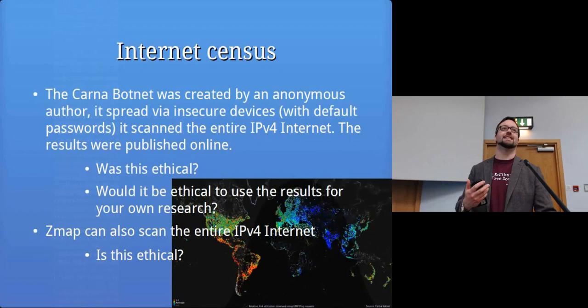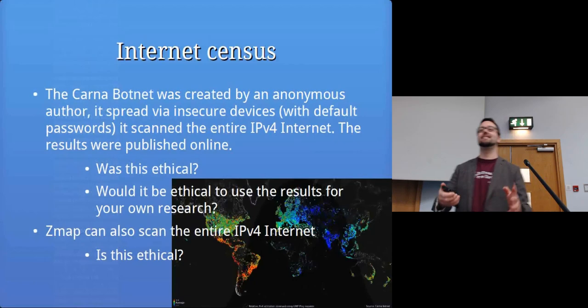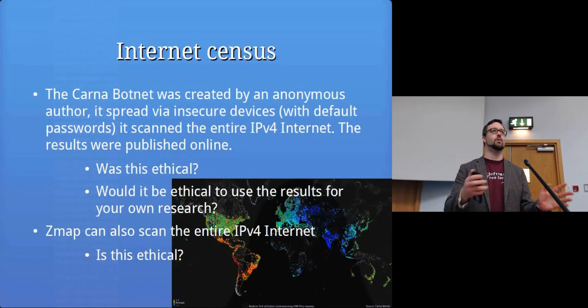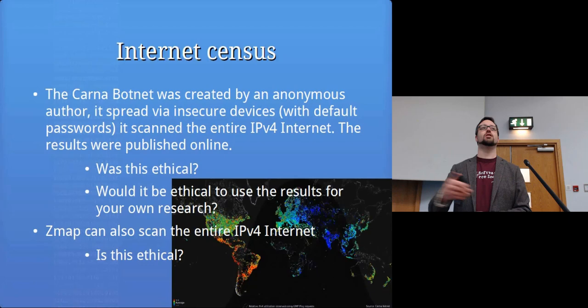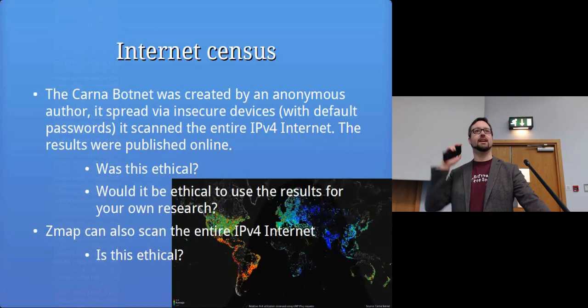Consider the Nazi Germany analogy: they conducted experiments we would never consider okay, but the results told us things about human physiology and psychology. Is it okay to use that information, or should we ignore it? The argument is: you can use it because it's not you who did something wrong - somebody already did it, it's not in your hands anymore, so use it. It's basically considered acceptable by most universities.